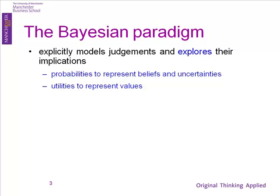The method, as you'll see, is very, very simple. But it's how you interpret that method that seems to make the difference. Because the Bayesian view of statistical inference and scientific inference isn't that things are objective — rather, they're subjective. You go in and you model judgments, and you explore the implications of variation in judgments.